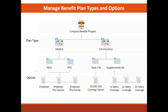We have seen in the diagram that options are at the lowest level of the hierarchy, as we also saw in a previous session. These are electable choices within a plan — for example, coverage for employee only and for employee plus one. You can see the plan type and the options, and we have the ability to associate an option within one or more plan and plan type. In this session, we are going to see how we can create the options and how we can associate an option with the plan type.